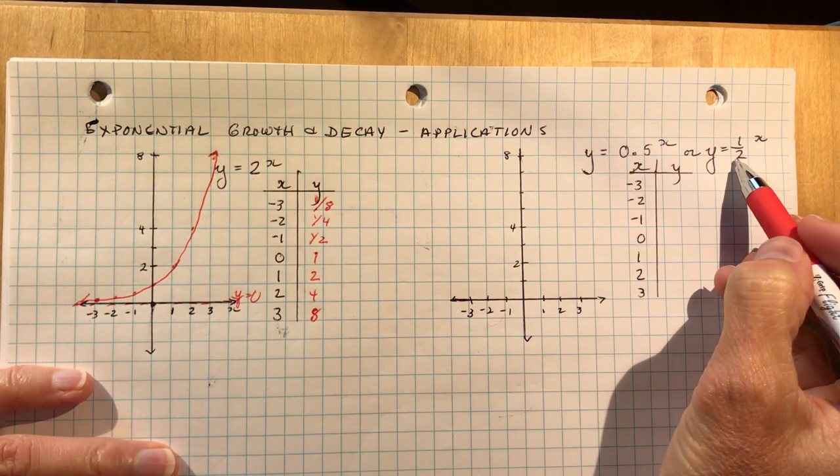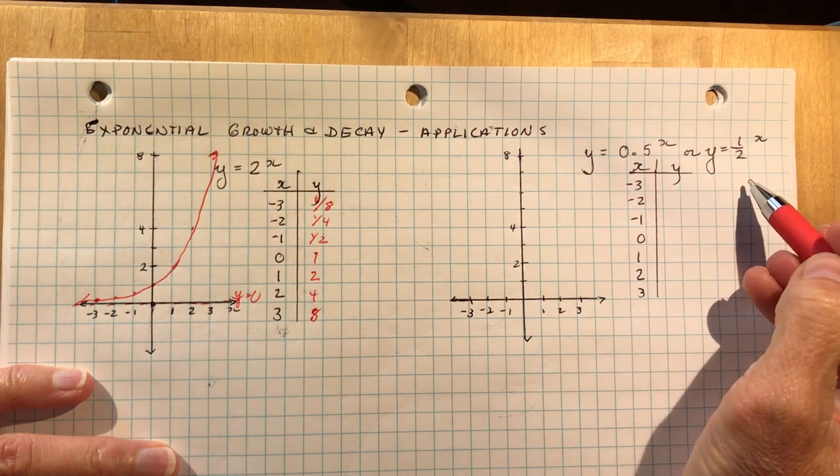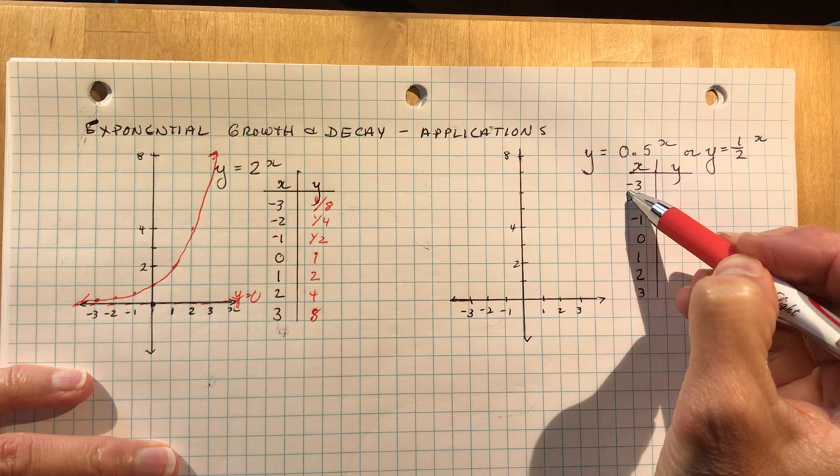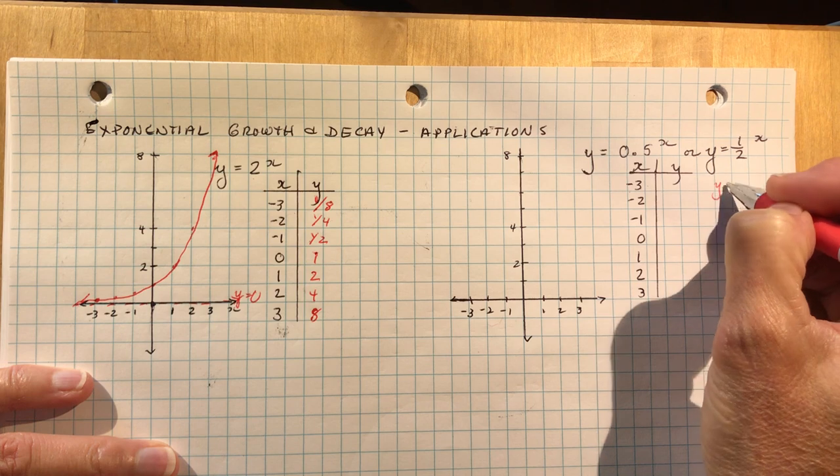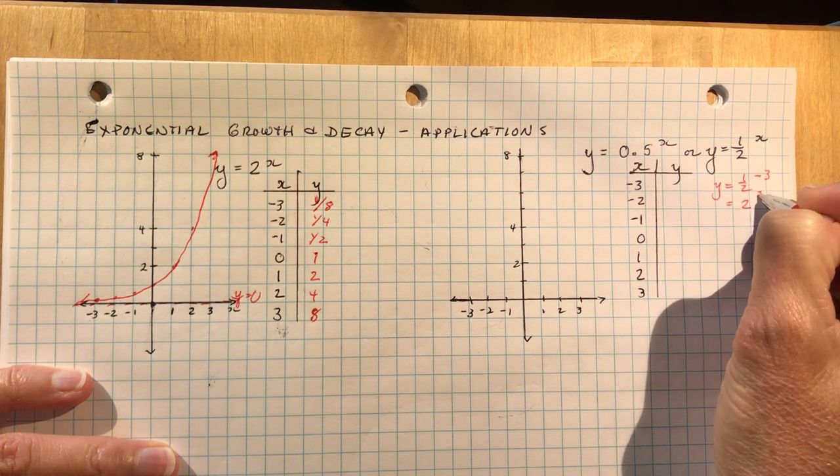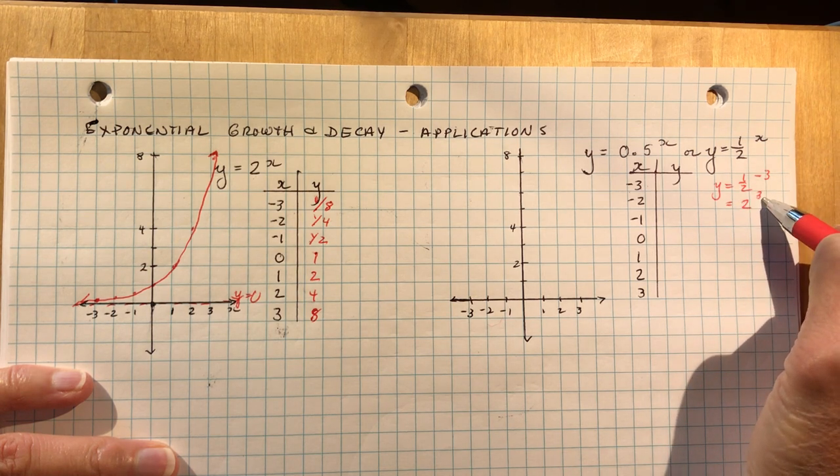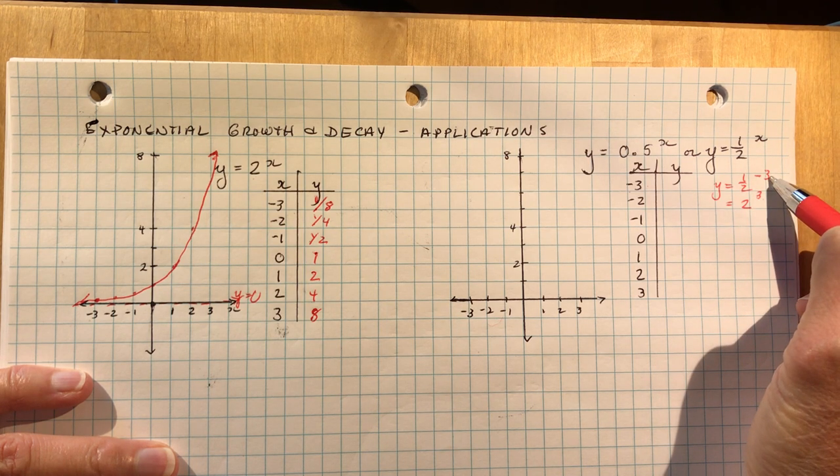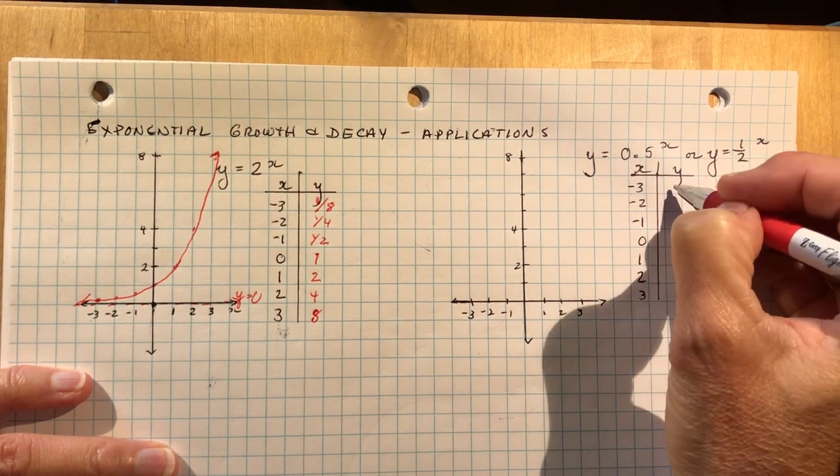So if we go over to the half power, a half to the power of x, or 0.5 to the x is the same thing. I could write it as a half to the negative 3 is the same thing as 2 to the power of 3. Remember, with your exponents, if you have fractions, you can flip it and change the sign. Because basically it means I'm doing a half to the power of 3, which is an eighth, and then I'm flipping it, which gives me 8.